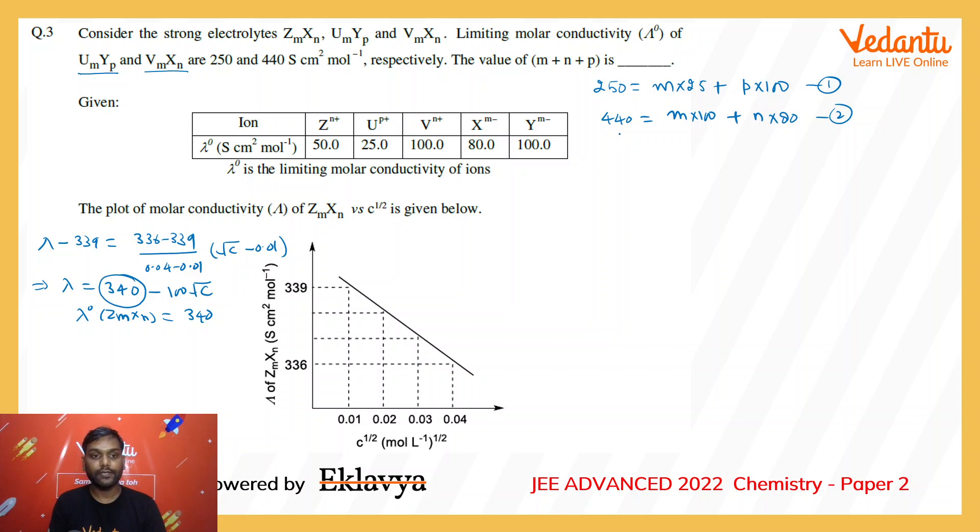Now we can add a third equation in terms of the third salt: 340 = M × conductance of Z, which is 50, plus N × conductance of X, which is 80. That is our third equation.